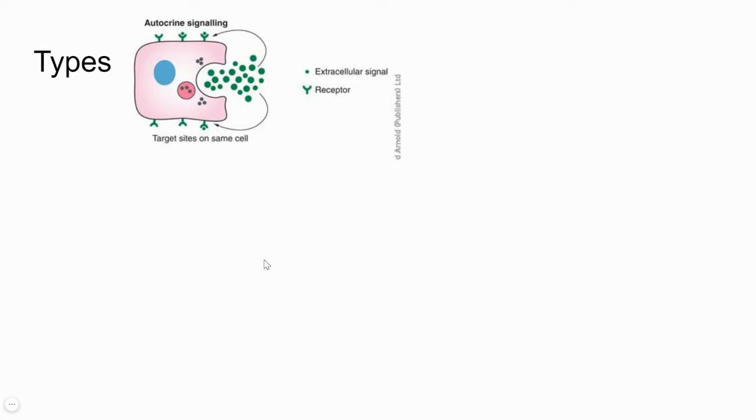While studying cell signaling theory, we came across three different types. The first one is autocrine signaling, where the signal molecules are released by the cell and the signal molecule's target is the same cell. The cell which is producing the signaling molecule is the target itself. When the signal binds to the receptor, it sends a message and the cell performs a particular response, like producing a protein or an enzyme.